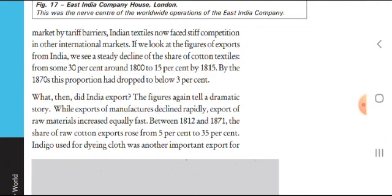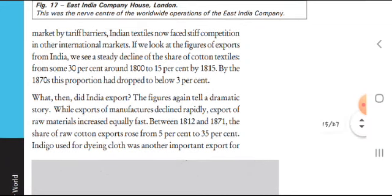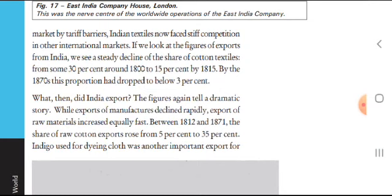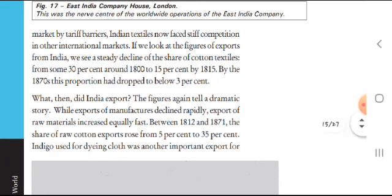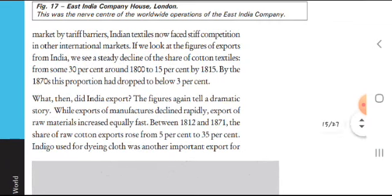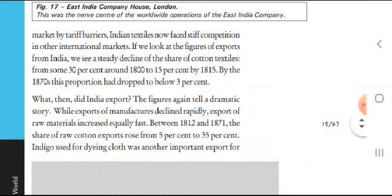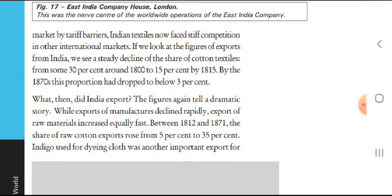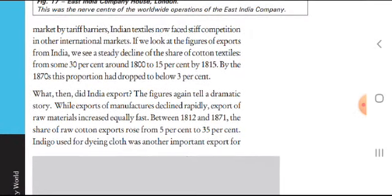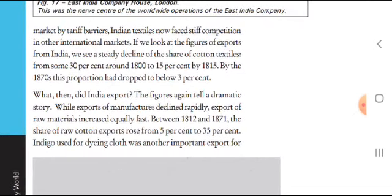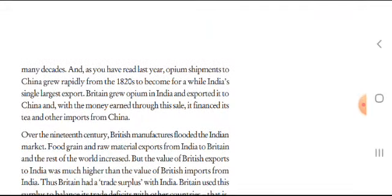What did India export then? The figures tell a dramatic story. While exports of manufactured goods declined rapidly, exports of raw materials began — raw cotton, raw materials, and indigo. There were also many decades of indigo gold, which was used for dyeing clothes.